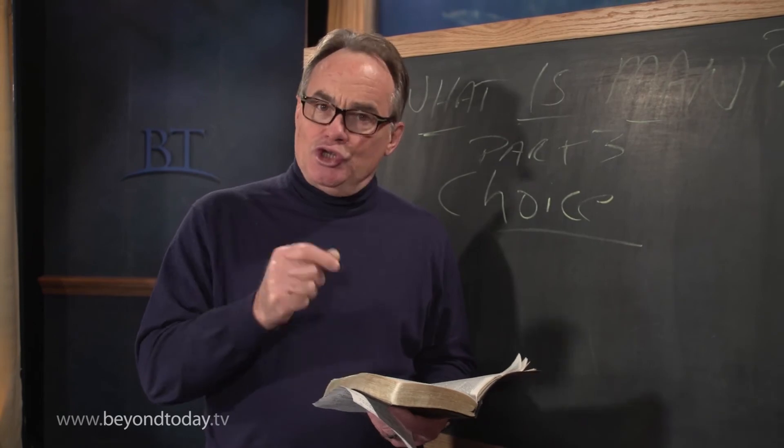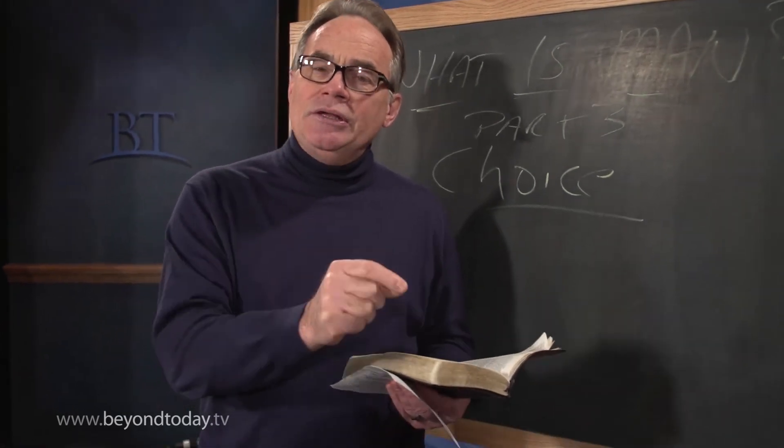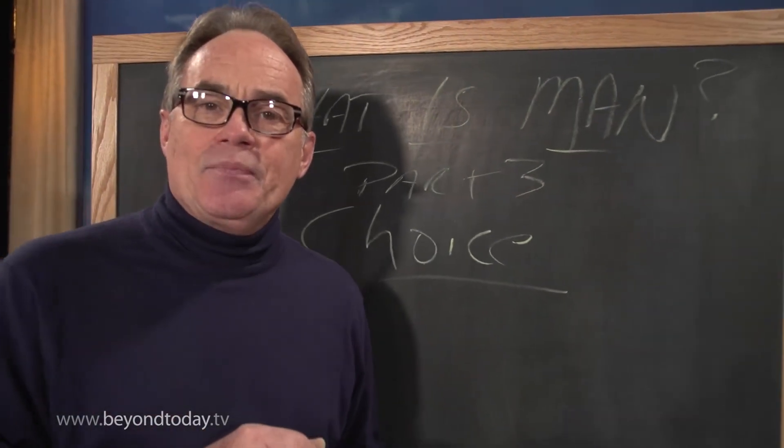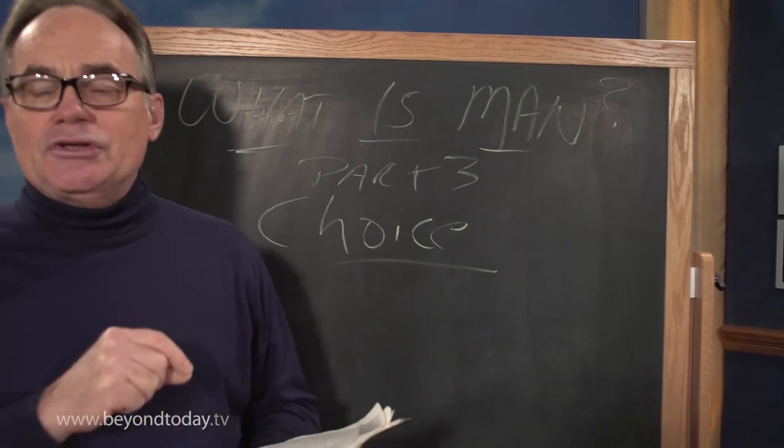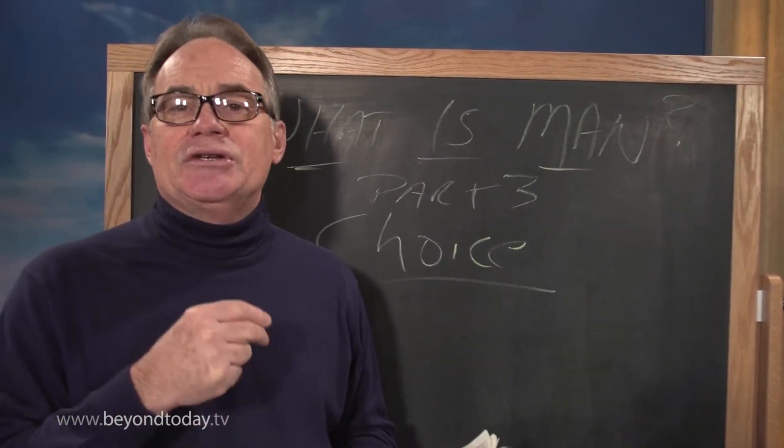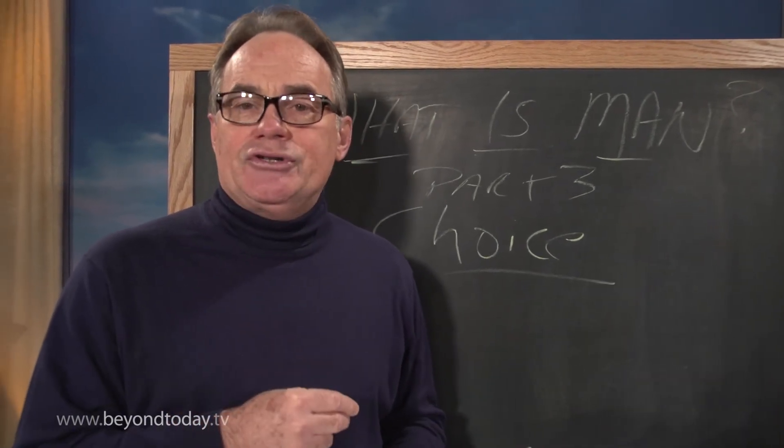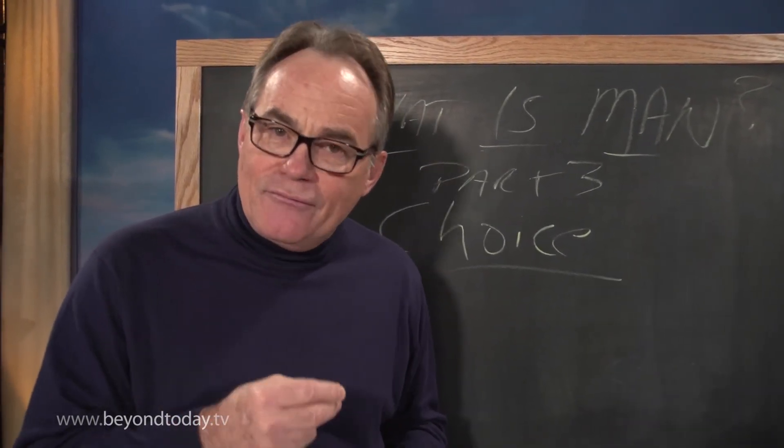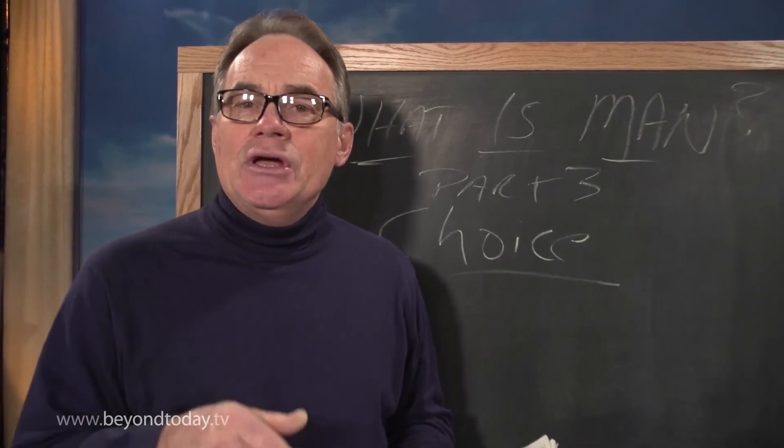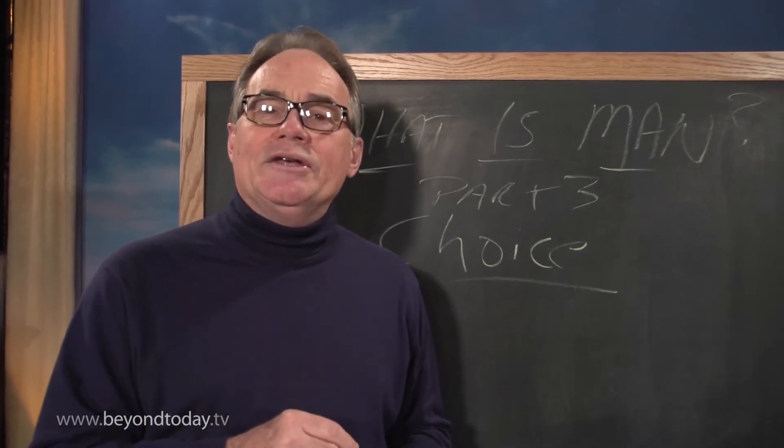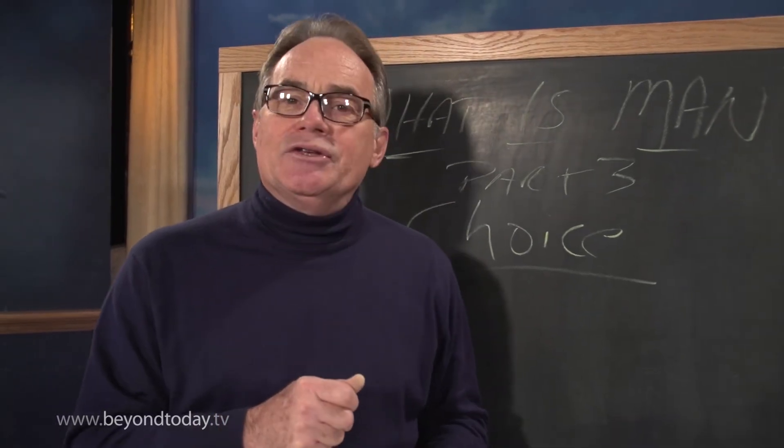Now, today you and I have the choice to choose between two ways, between good and evil. God still gives us that choice. And that's, again, embedded in this story of the first chapters of the book of Genesis that really begin to tell us exactly what man is. Man is created in the image of God with the potential to become a member of the family of God and to share in the glory that God has and desires to share with all who choose wisely.